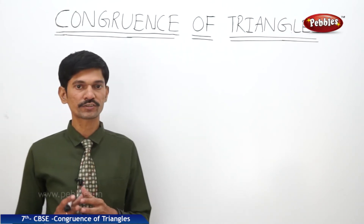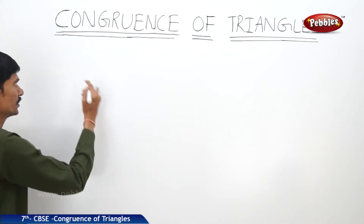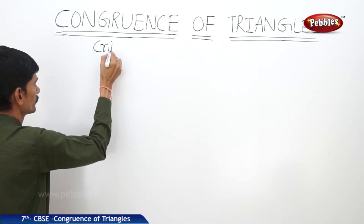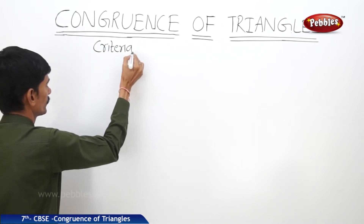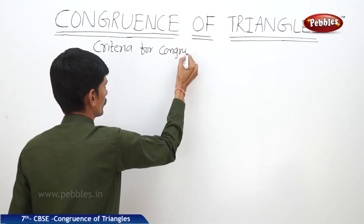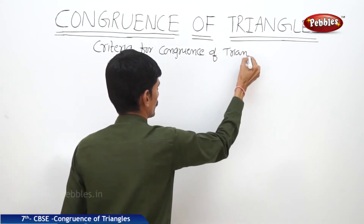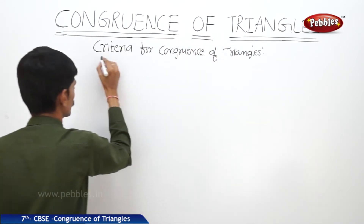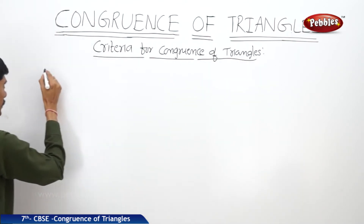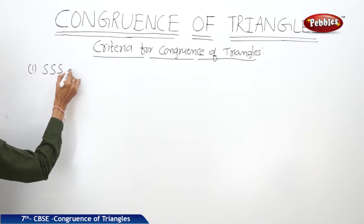Now let us discuss the Criteria for Congruence of Triangles, and each congruence criterion. First, let us start with the SSS Congruence Criterion, that is Side Side Side.